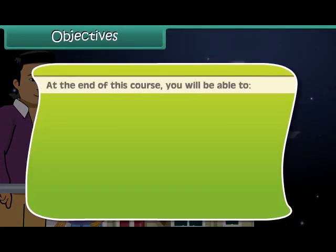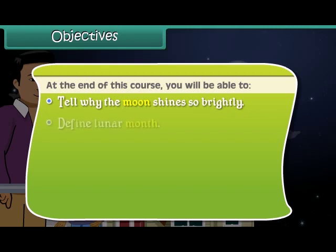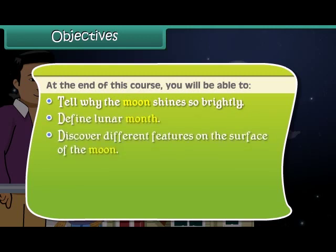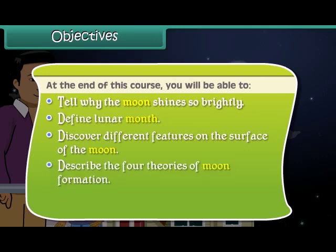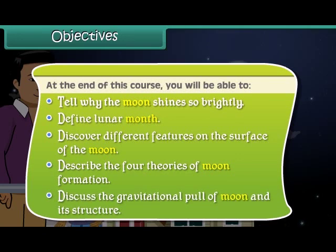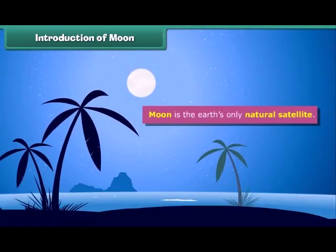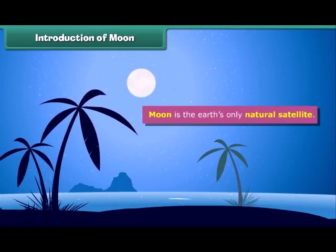At the end of this course, you will be able to: tell why the moon shines so brightly, define lunar month, discover different features on the surface of the moon, describe the four theories of moon formation, and discuss the gravitational pull of the moon and its structure. The moon is the Earth's only natural satellite and it is the second brightest object in the sky after the Sun.